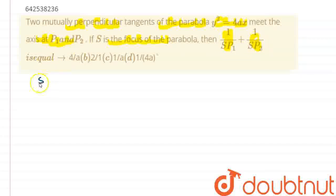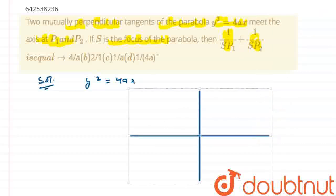Let's start the solution here. We have given the parabola equation as y square is equal to 4ax and the tangents are meeting at x-axis. So, let's draw the figure first. This is the x-axis and we have a parabola, y square is equal to 4ax. So, let this be parabola y square is equal to 4ax.